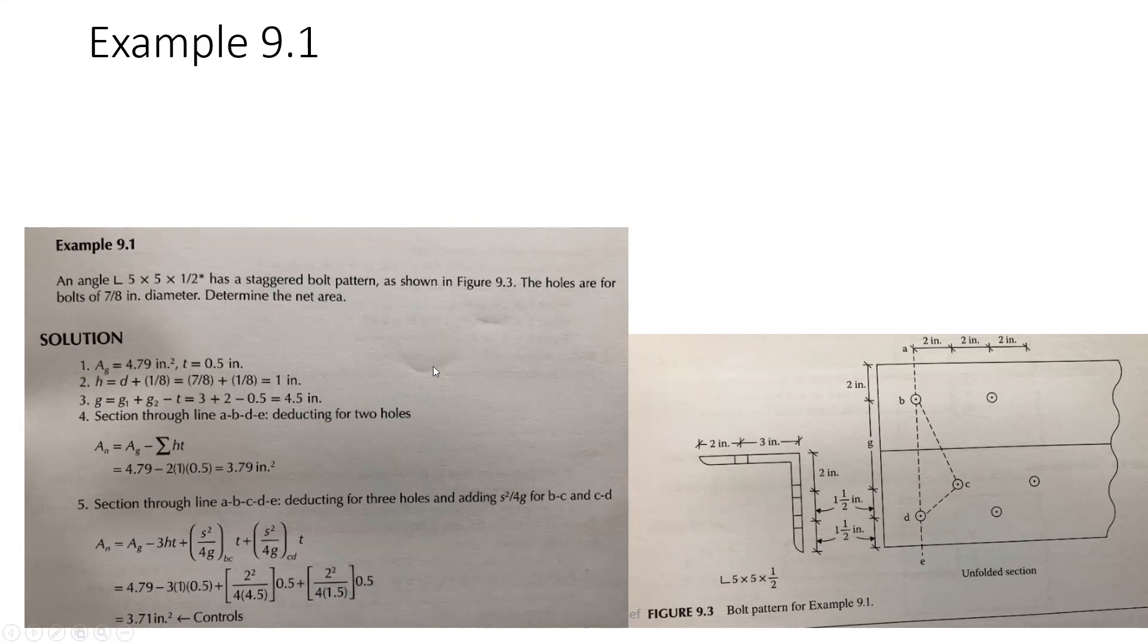So now let's read the problem statement first. An angle L five by five by half inch, they're talking about this angle here. You have two legs equally the same five by five with half inch thickness. Has a staggered bolt pattern, as shown in this figure here. The holes are for bolts of seven-eighths of an inch diameter. Determine the net area. So first, before diving through the solutions, let's understand this shape here, this figure.